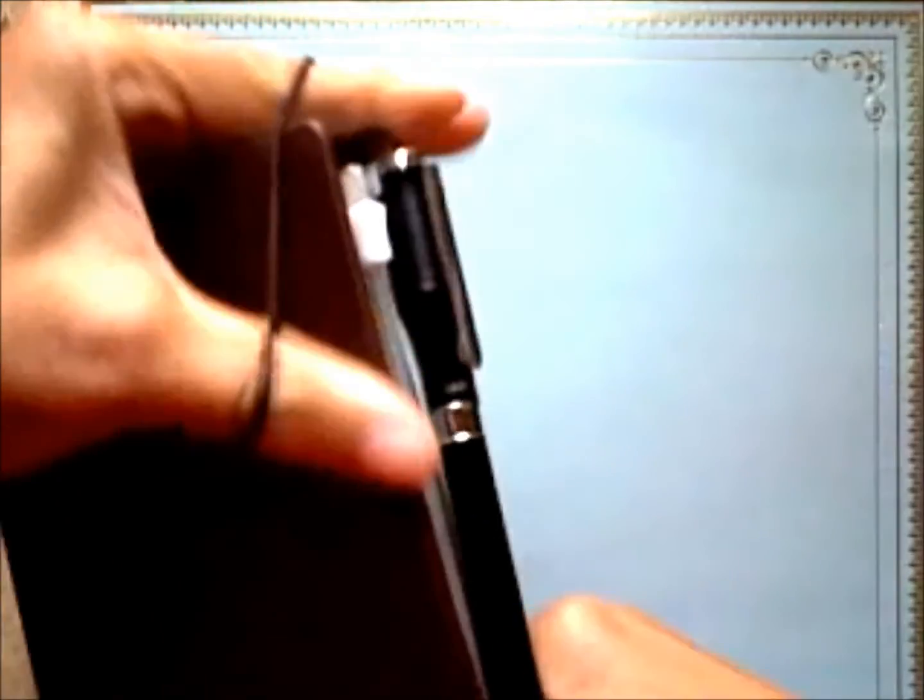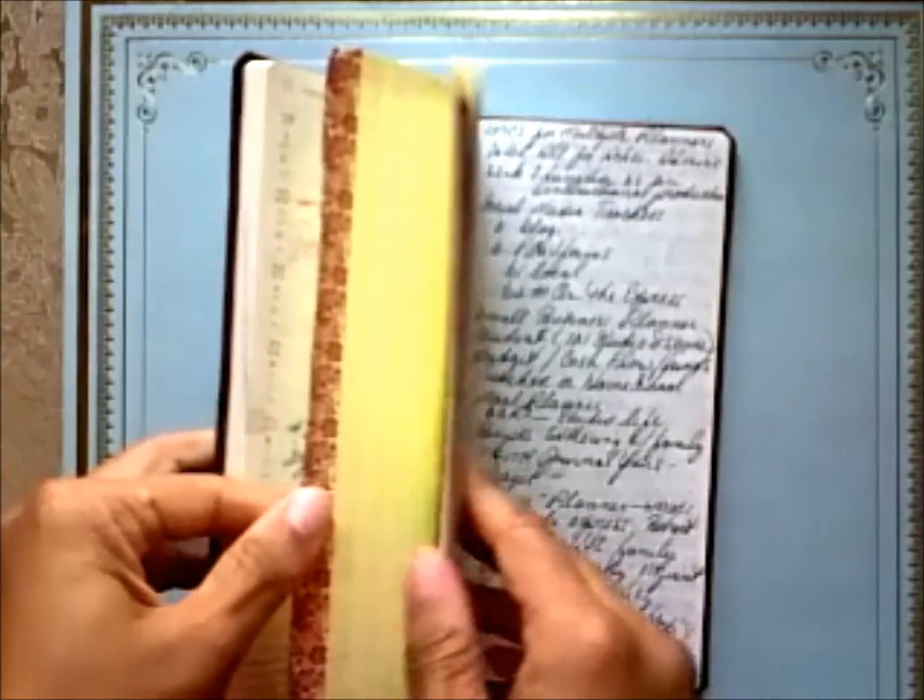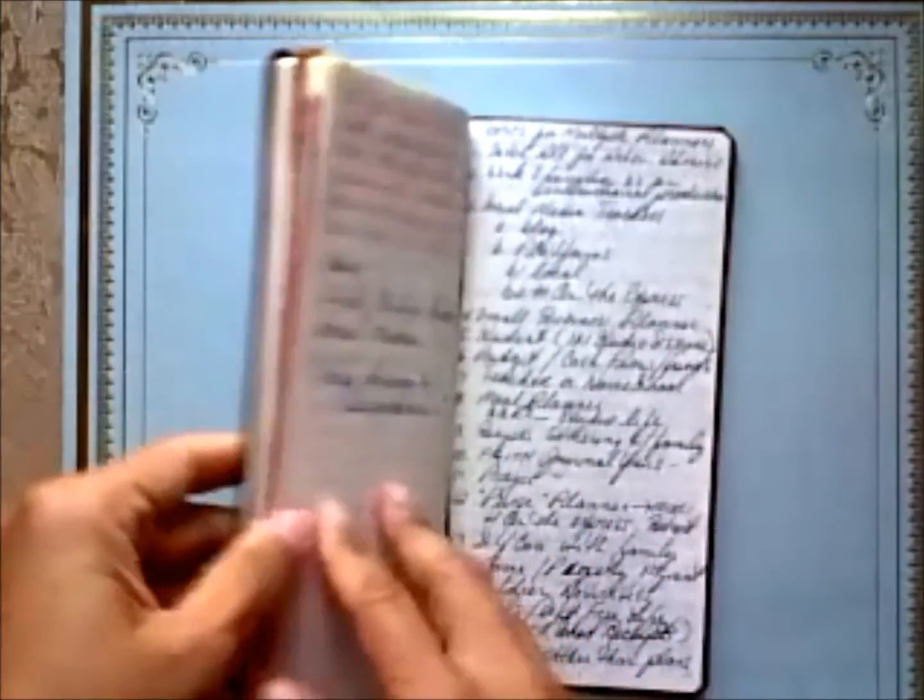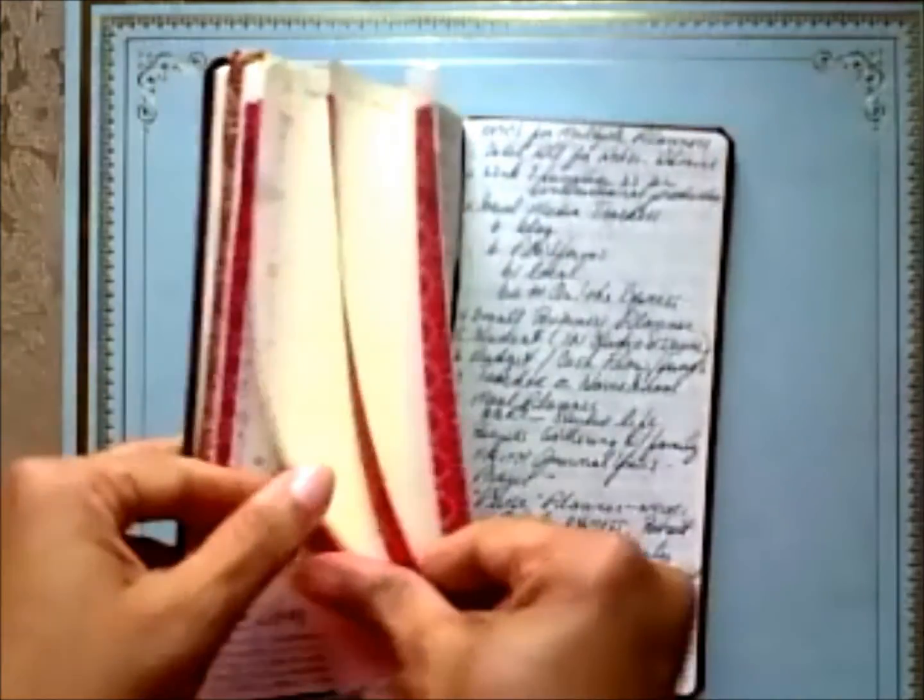Now for December, what I did was went ahead and set it up for weekly annotation. Let me give you an update on the Hobonichi. Turn to a blank page first.